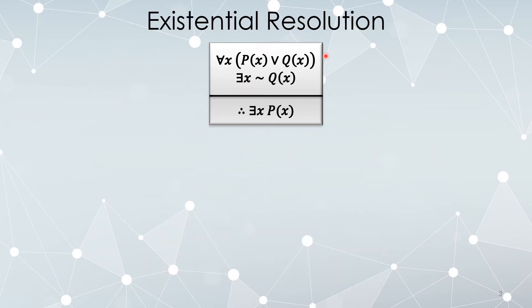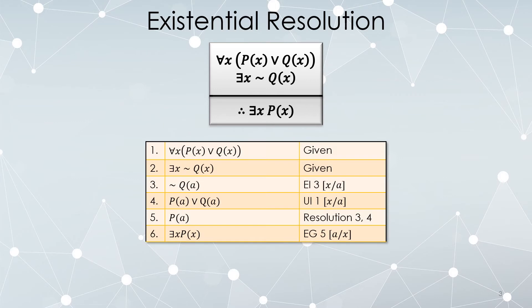Now let's take a look at an existential generalization version of that. For any x, either P of x or Q of x is true. There is an element for which Q of x is false. Therefore, there must be an element for which P of x is true. The proof is more or less the same as the last one. We just have to be slightly careful.